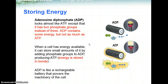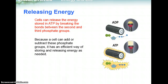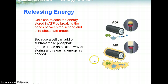When you're looking at a molecule, chemical energy is stored in the chemical bonds. As an analogy, ADP is like a rechargeable battery that powers the machinery of the cell. When you want to release energy, cells can release the energy stored in ATP by breaking the bonds between the second and third phosphate group. This converts ATP back to ADP, and then it can cycle back to ATP if you add a phosphate and make a third bond. There's a cyclical relationship between ATP and ADP, and because a cell can add or subtract these phosphate groups, it has an efficient way of storing and releasing energy as needed.